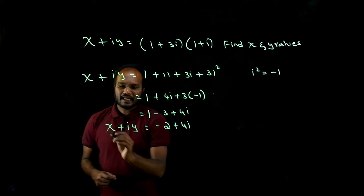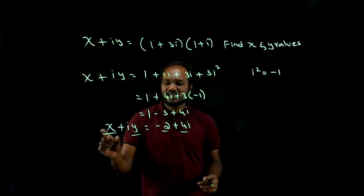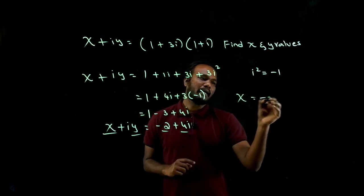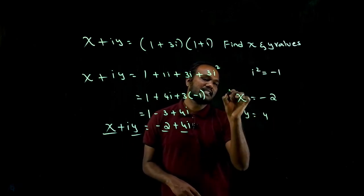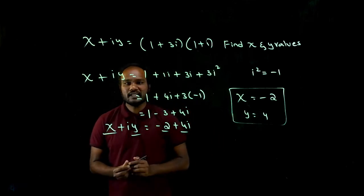See, here I can compare this number and this number, isn't it? So if I compare this number to this number, x value will be equal to minus two, and y value will be equal to four. This is x value, this is y value. Is that okay? Yes, okay.